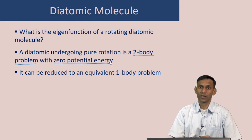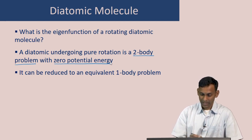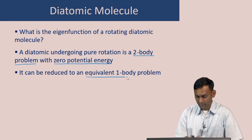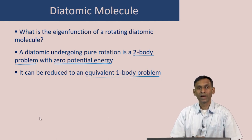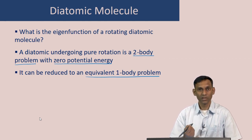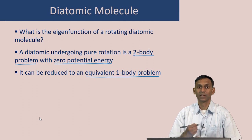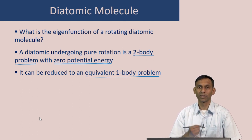You can reduce this two-body problem, where there is no translation of the center of mass and there is only kinetic energy, to an equivalent one-body problem where there is a rotation of only one mass. This mass has a different value called the reduced mass, and it undergoes rotation with the same angular velocity as that of the diatomic molecule.